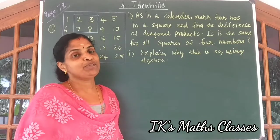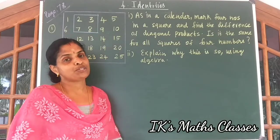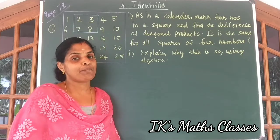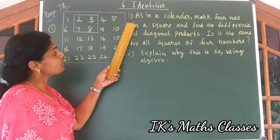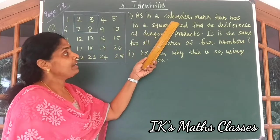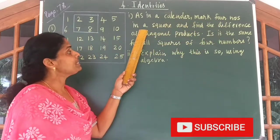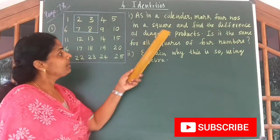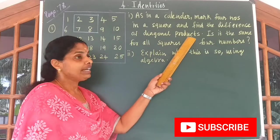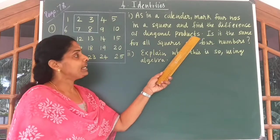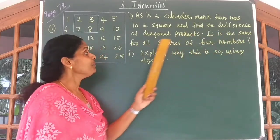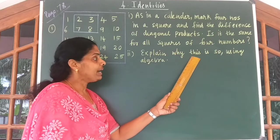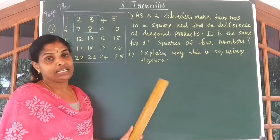Hi kids, welcome to the second part of identities. I am discussing questions in page number 78. First question: as in a calendar, mark 4 numbers in a square. You are given numbers from 1 to 25. Find the difference of diagonal products. Is it the same for all squares of 4 numbers? Explain why this is so using algebra.